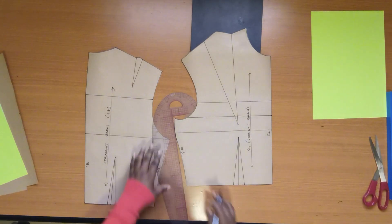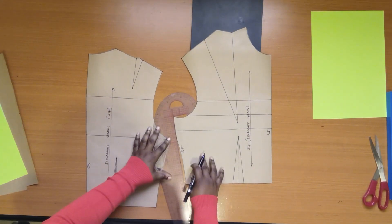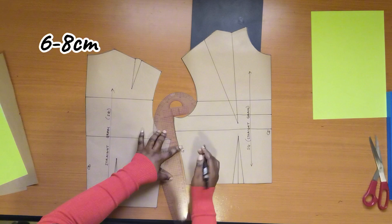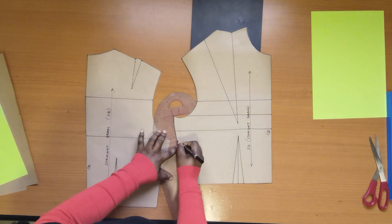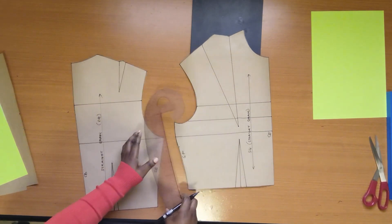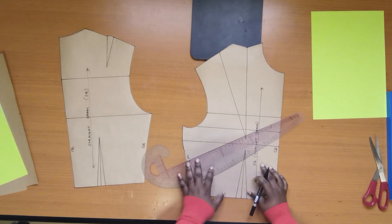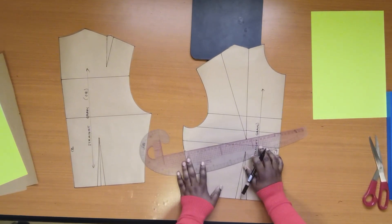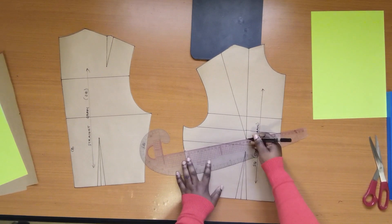On the front bodice, measure a point from about 6 cm to 8 cm down from the underarm point. Then rule a line from that point to the tip of the shoulder dart.